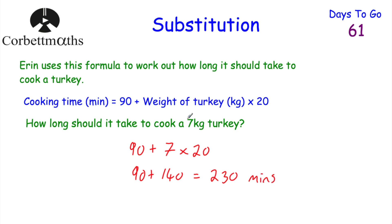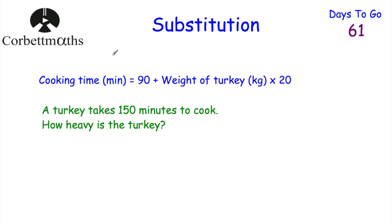The turkey weighed 7 kilograms, so we did 7 times 20 which is 140, and then 90 plus 140 equals 230. Remember our order of operations — we must do the multiplication before the addition. So 7 times 20 is 140, plus 90 equals 230. And that's it.